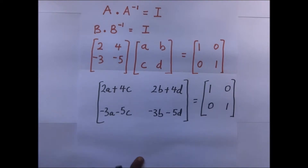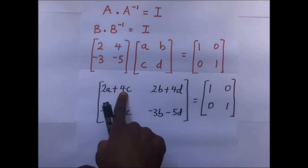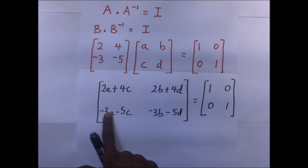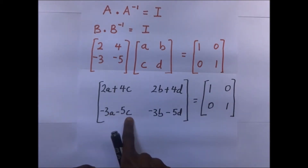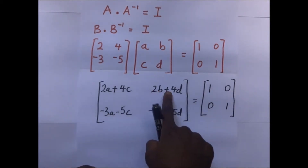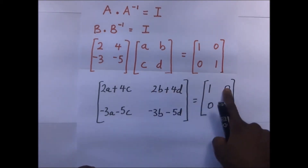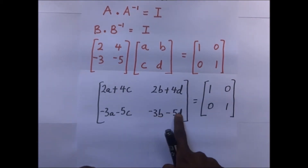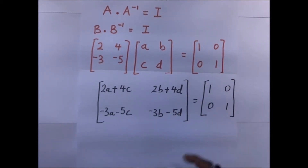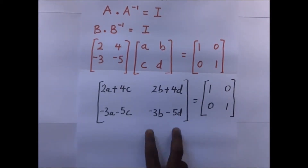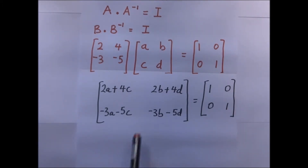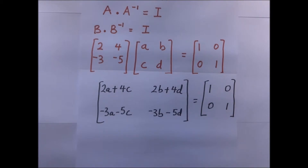From the matrix multiplication we extract the following equations: 2A + 4C = 1, -3A - 5C = 0, 2B + 4D = 0, and -3B - 5D = 1. We will formulate simultaneous equations from these to find the unknowns.